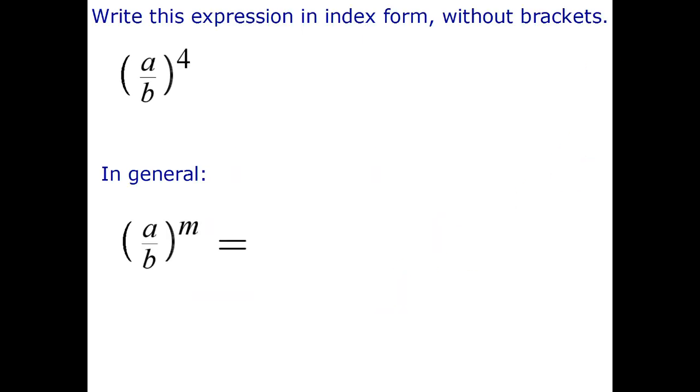Let's write this expression in index form without brackets. I've got a over b all to the power of 4. Let me get my pen tool. Let's write that out in expanded form. That's a over b times a over b times a over b times a over b.